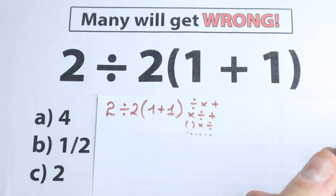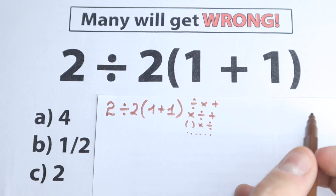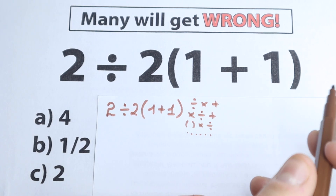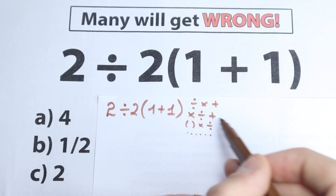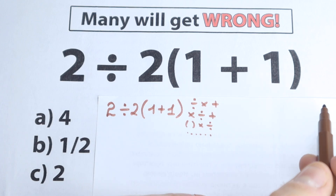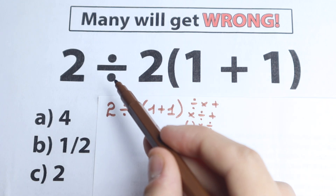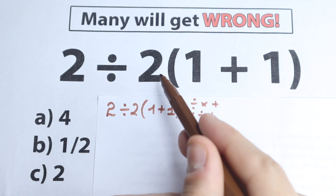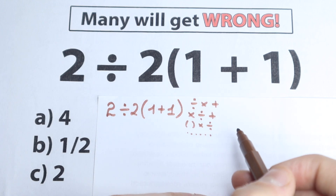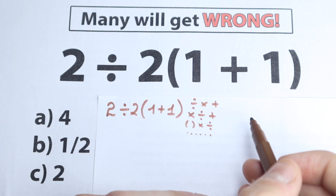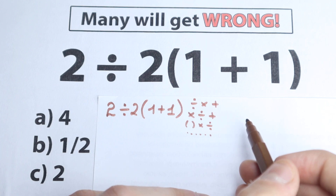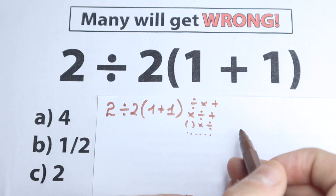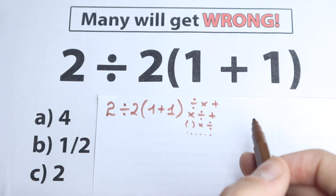In math we have only one correct answer, so let's look at it from another perspective. We have a lot of combinations, and obviously whatever order of operation we select is going to create a different answer. If we start from division we get one answer, if we start from parentheses another, if we start from multiplication a completely different answer. So our main question is: what is the correct order to do the problem?